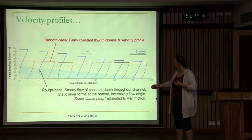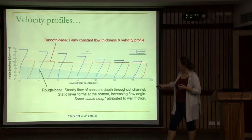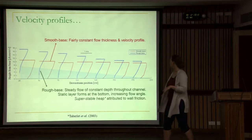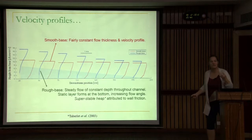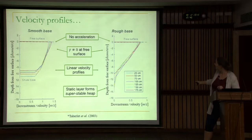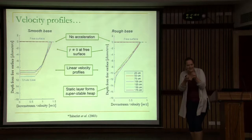Comparing velocity profiles with distance from the origin: for the smooth base we have a lot of slip at the bottom and an almost constant, identical velocity profile, with height not changing much. For the rough base we have no slip — particles are almost stationary near the base — but a layer translates down. We have something reminiscent of a super-stable heap, which we attribute to wall friction since we're in a 2D system. But if you plot velocity profiles from the top, they overlap really nicely, with just some details at the bottom in the static layer that differ.